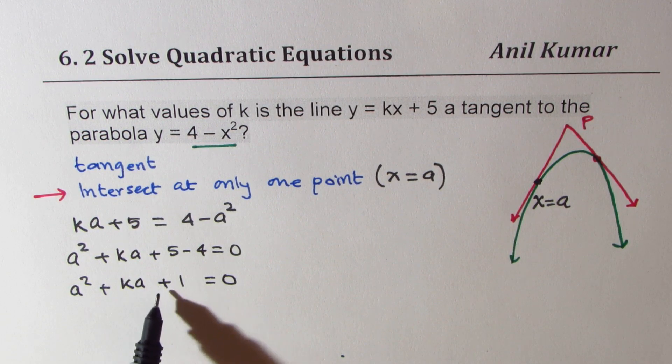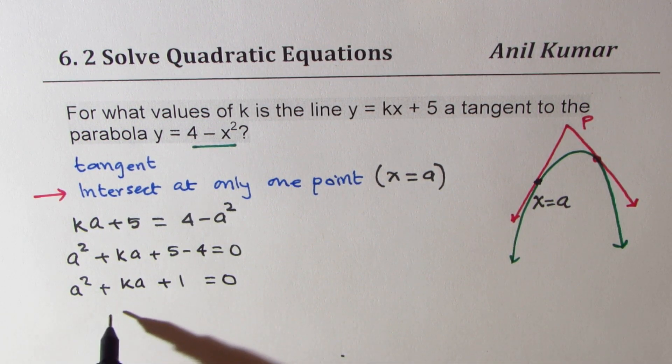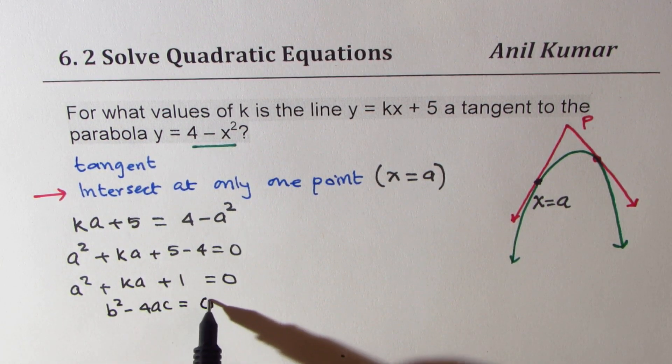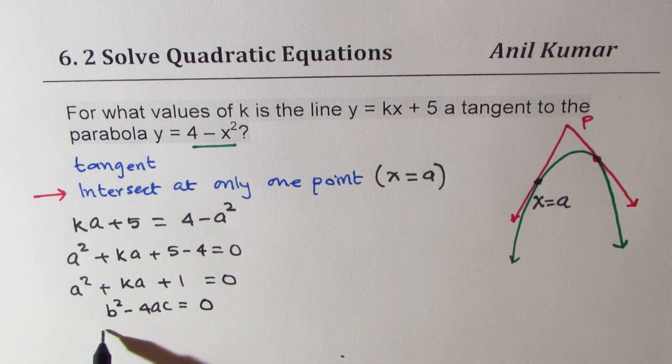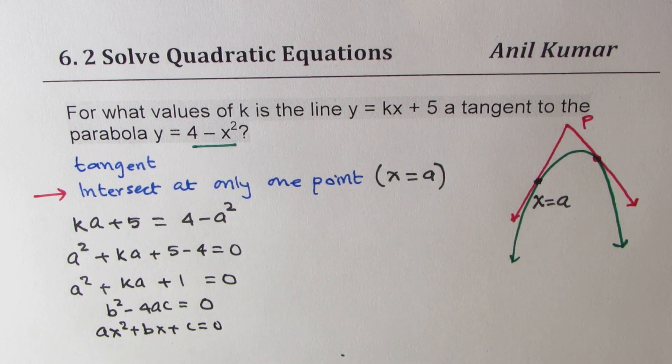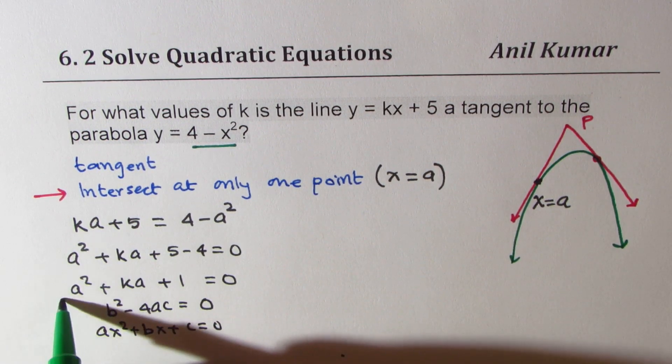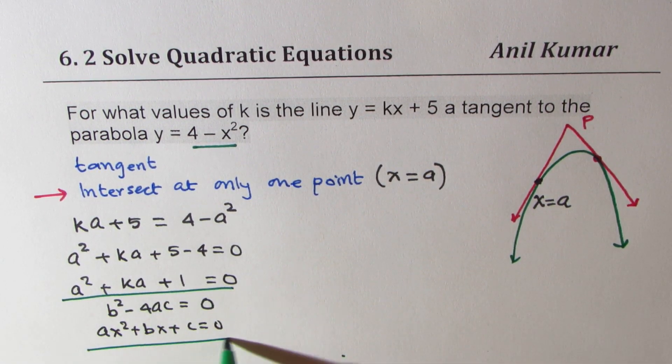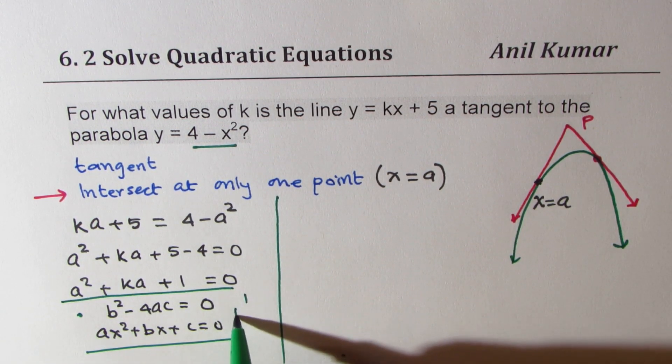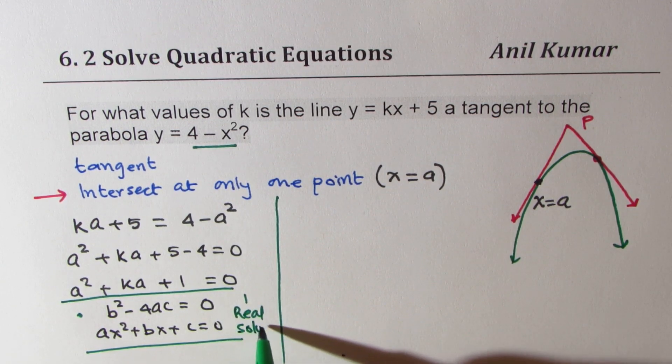Now to get only one solution, we know that b² - 4ac should be equal to 0 for equation which is of the form ax² + bx + c = 0. So that is an additional information which I am providing you here, known to you. So using this fact, this equals 0 gives me one real solution.